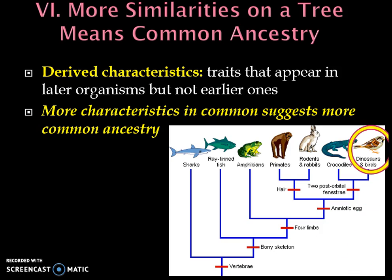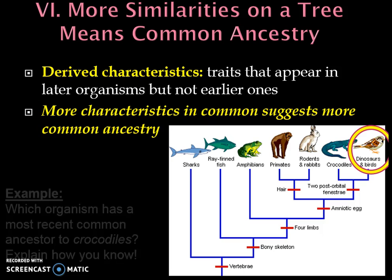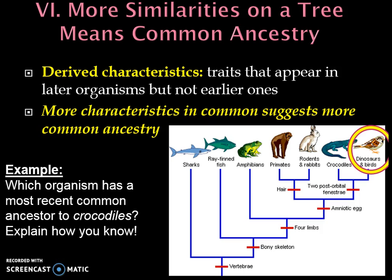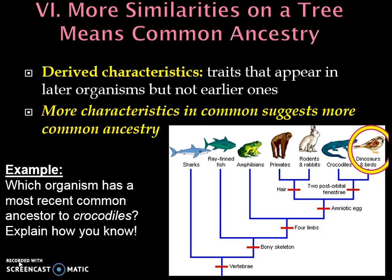Let's do an example. Which organisms have the most recent common ancestor with crocodiles? The answer is dinosaurs and birds. Why? Because they are closest on the tree and share the most characteristics in common: amniotic eggs, four limbs, bony skeletons, and a backbone — but not hair. They're somewhat close to rabbits, but not as close as dinosaurs and birds. We'll practice reading cladograms more in class. Great job, everyone.